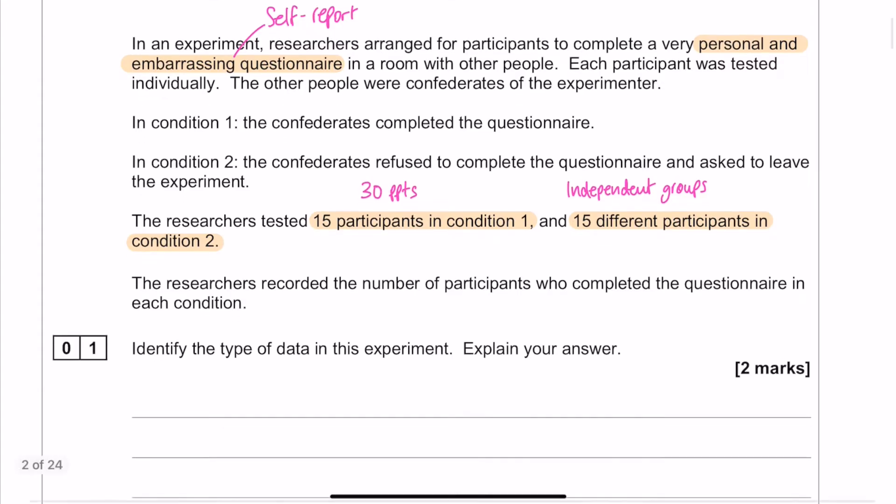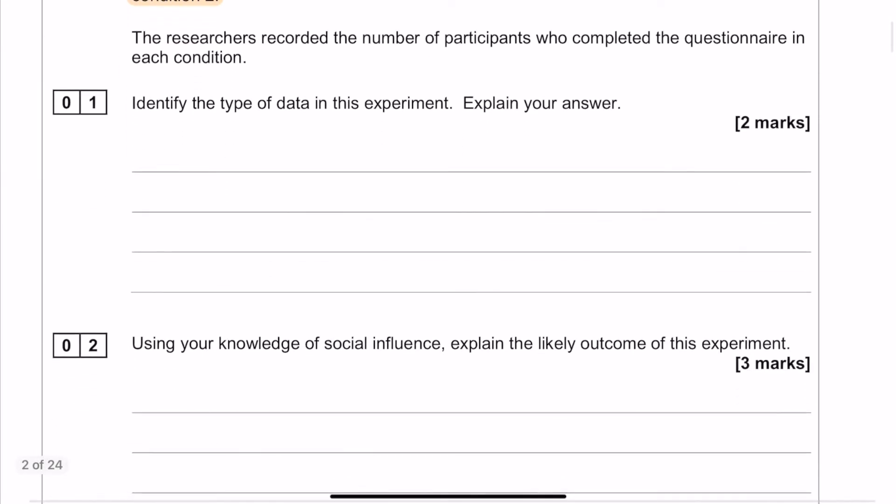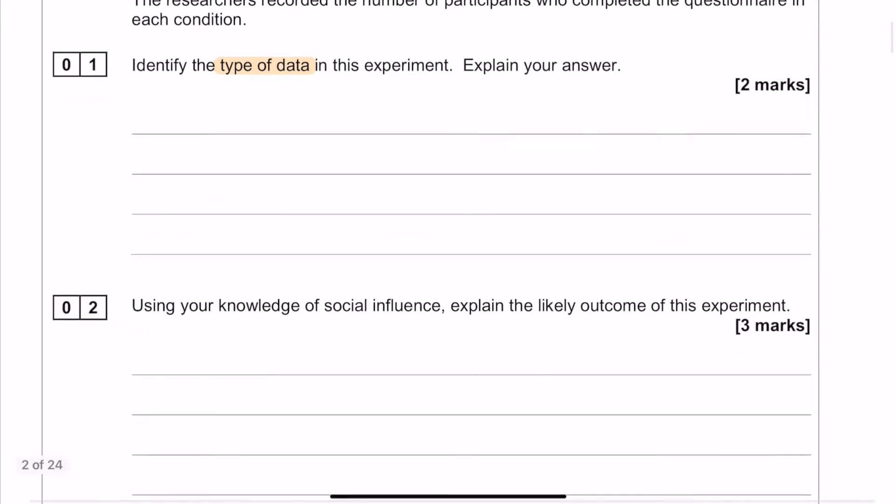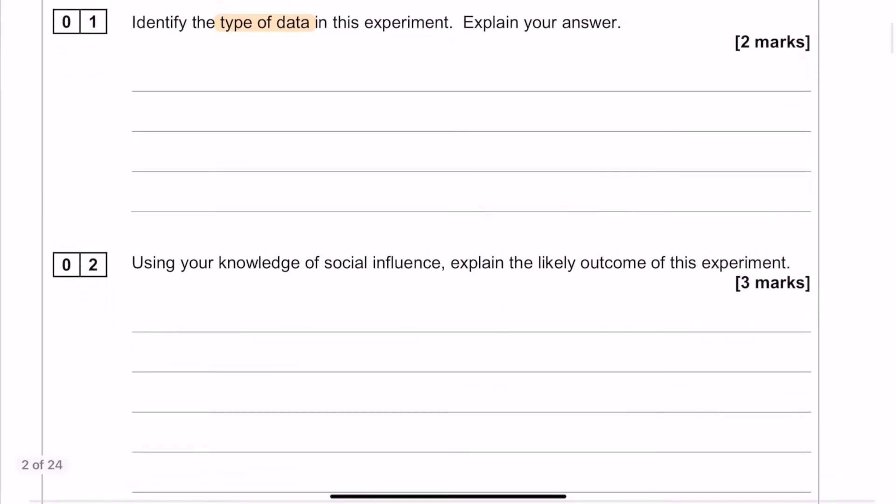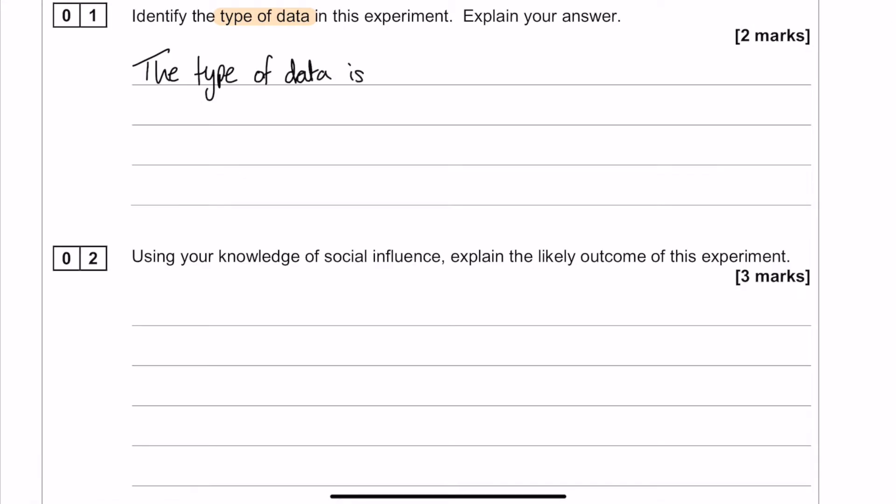So now that we've got that, let's get straight into the questions. The first question is all about types of data. Realistically, you've got three choices here: you've got primary data, quantitative data, and also nominal data. So pick one and explain why you've chosen that one using the stem.